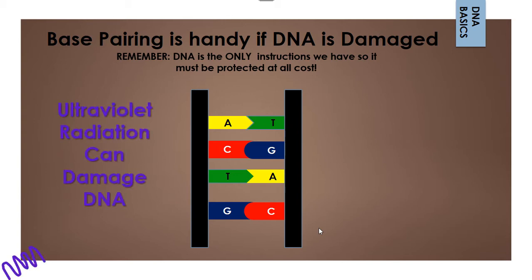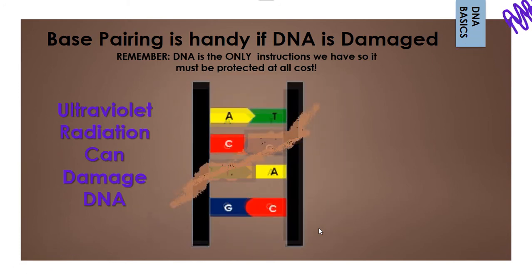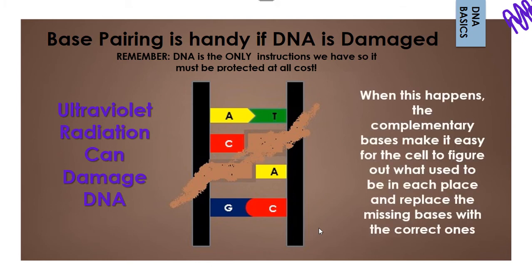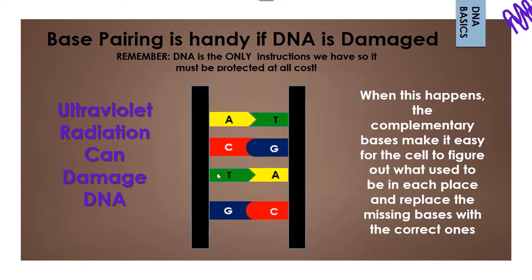For example, if ultraviolet radiation damages the DNA, then what can happen is bases can be destroyed, and those could be very important instructions. And so because there are two strands, that makes it easy for the cell to figure out what to do and how to fix this situation, because it knows, for example, that if there's a C here, a G goes here, and if there's an A here, a T must go here. And so those are easily fixed, just like that.